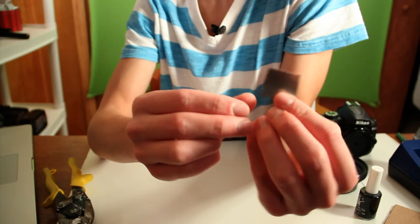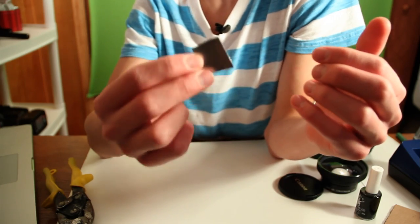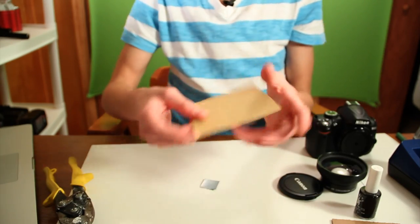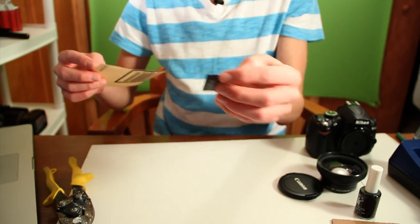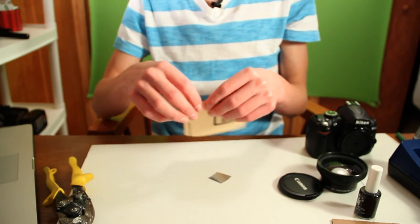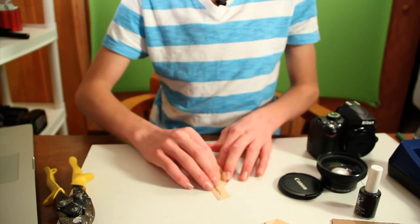And when you're done, you should have a piece of metal around this size. Okay, the next thing you're going to want to do is take your sandpaper and sand both sides of it to just thin out the can.